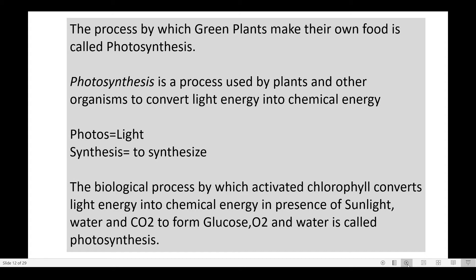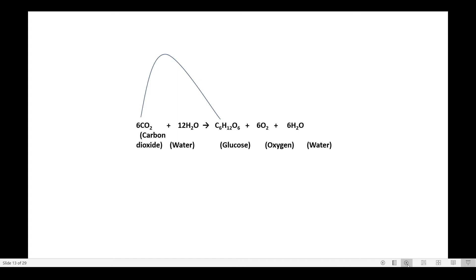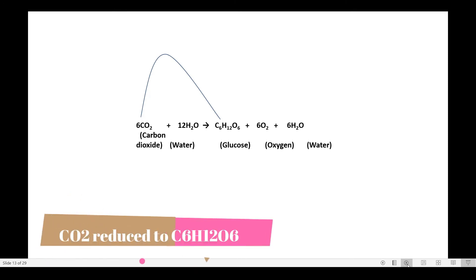Photosynthesis is divided into two phases: the light phase and the dark phase. The light phase takes place in the grana region of the chloroplast, while the dark reaction takes place in the stroma region. In the light phase, light is essential; the dark phase is light-independent. In the chemical equation, six molecules of CO₂ react with 12 molecules of water to form one molecule of glucose, six molecules of oxygen, and six molecules of water. Here, CO₂ is reduced to glucose and water is oxidized to oxygen — a classic example of simultaneous oxidation and reduction.